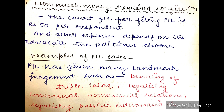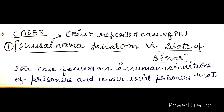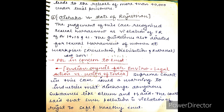India में PIL से जो outcomes निकल के आए हैं, जैसे triple talaq का ban करना, consensual homosexual relations को legalize करना, passive euthanasia को legalize करना, etc.। Cases related to PIL में सबसे पहला first reported case of PIL था — Hussainara Khatoon versus State of Bihar। इस case का main focus था कि under trial prisoners की inhuman conditions को लेकर, and that led to the release of more than 40,000 under trial prisoners।